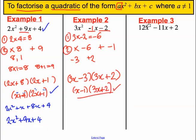Last one, step 1, 12 times 2 is 24. Question, you ask yourself, what times to give 24, and adds up to give negative 11.